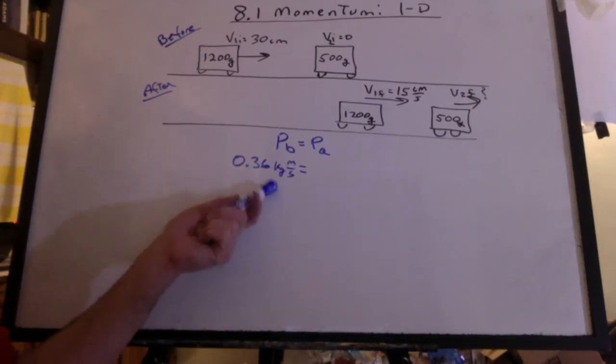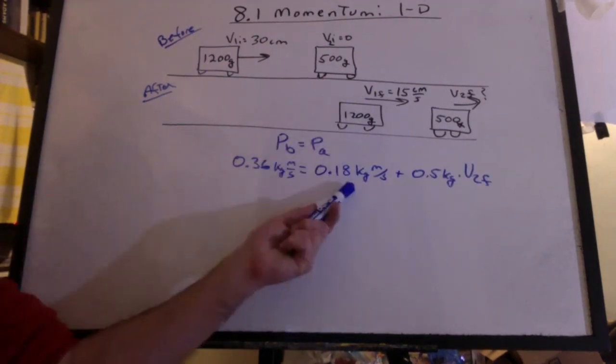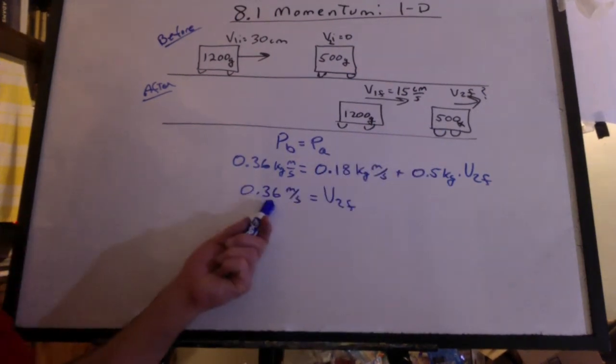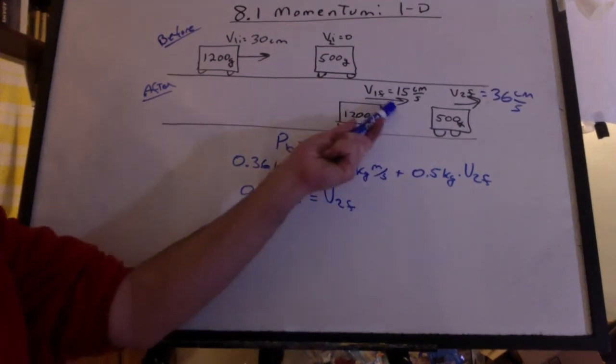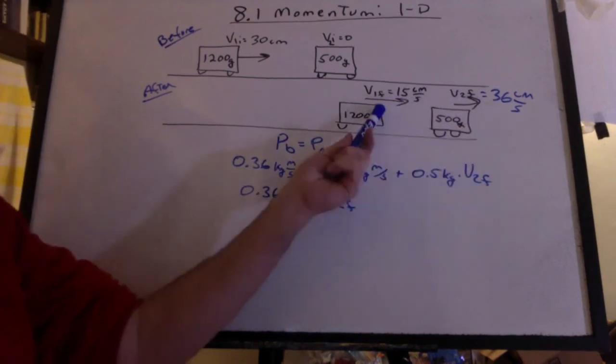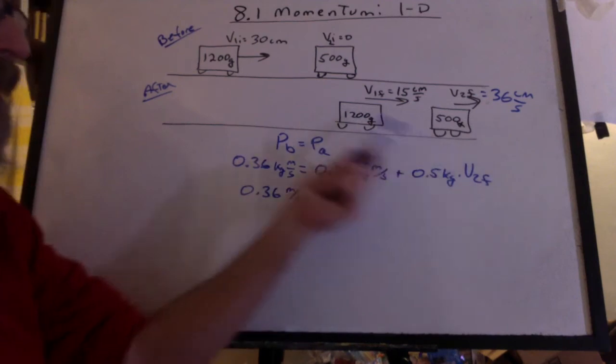Hopefully, you got 0.36 kilogram meters per second. The momentum of this cart after plus the momentum of this cart after. And we get 0.36 meters per second for this cart. Kind of makes sense. This one slowed down, that one sped up, and this one's going faster than this one. It couldn't be the other way around, or this one would've shot right through it, unlikely with carts.